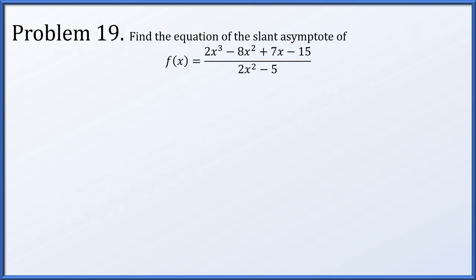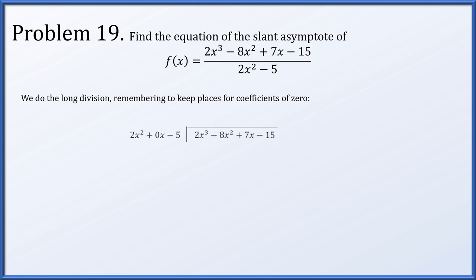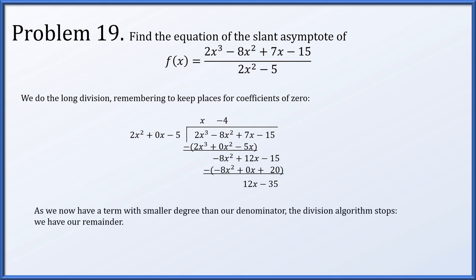In problem 19, find the slant asymptote of f(x) equals (2x cubed minus 8x squared plus 7x minus 15)/(2x squared minus 5). Setting up long division with the denominator written as 2x squared plus 0x minus 5: to cancel 2x cubed we need x; then to cancel negative 8x squared we need minus 4. After subtracting, the remainder is 12x minus 35, which has degree less than the denominator, so division stops. The quotient is x minus 4, giving the slant asymptote y equals x minus 4.